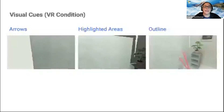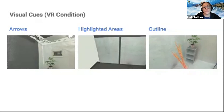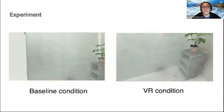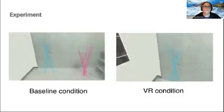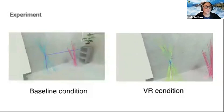To guide participant attention in VR, we added three types of visual cues: arrows indicating when to turn, highlighted areas showing regions of interest, and yellow outlines showing which object the expert was describing. The baseline condition showed images on a screen, whereas the VR condition allowed free exploration guided by visual cues.